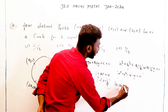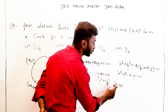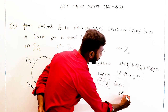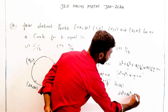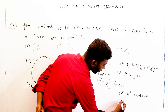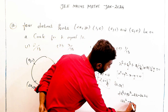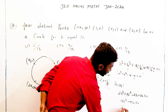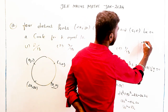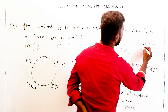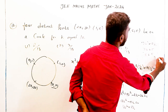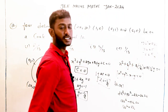Substituting (2k, 3k) into x² + y² − x − y = 0: (2k)² + (3k)² − 2k − 3k = 0, giving 4k² + 9k² − 5k = 0, so 13k² − 5k = 0. Therefore 13k = 5, and k = 5/13. The value of k is 5/13 — option 3 is the correct answer. Thank you.